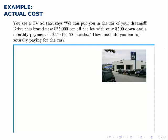It turns out this is a pretty straightforward calculation. The money you're paying is the $500 down right away, and then you're paying $550 60 times. So you pay $500 originally plus your monthly payment amount times how many times you make that payment.